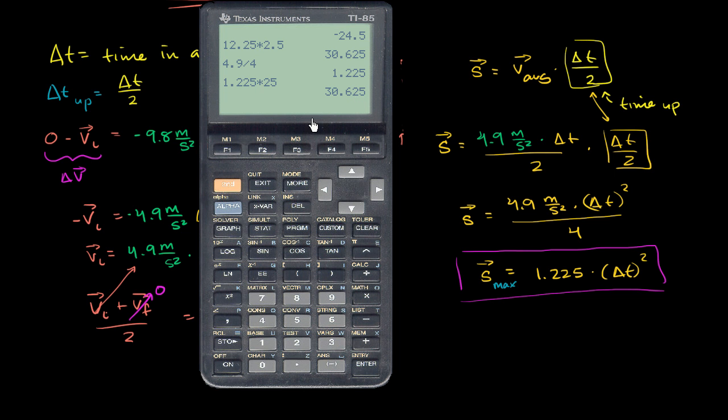If the ball is in the air for 2.3 seconds. So it's 1.225 times 2.3 squared. Then that means it went 6.48 meters in the air.